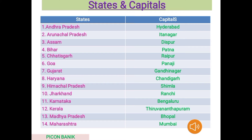Now see the states and capitals: Andhra Pradesh — Hyderabad; Arunachal Pradesh — Itanagar; Assam — Dispur; Bihar — Patna; Chhattisgarh — Raipur; Goa — Panaji; Gujarat — Gandhinagar; Haryana — Chandigarh; Himachal Pradesh — Shimla; Jharkhand — Ranchi; Karnataka — Bengaluru; Kerala — Thiruvananthapuram; Madhya Pradesh — Bhopal; and Maharashtra — Mumbai.